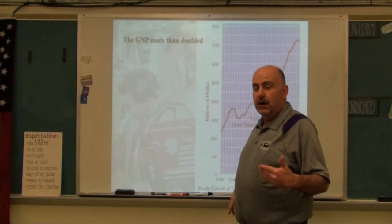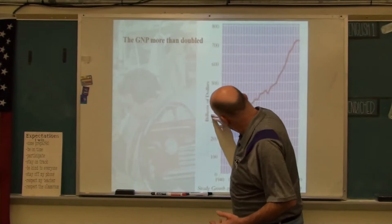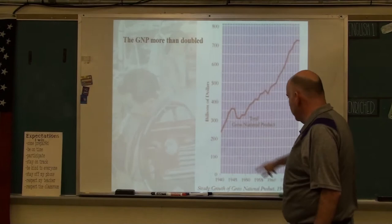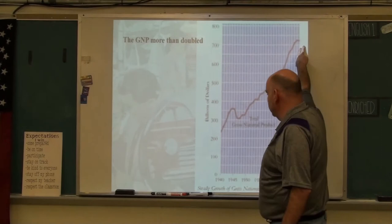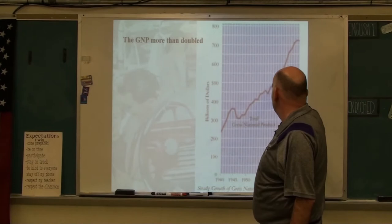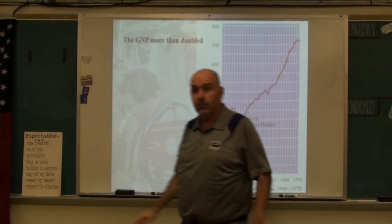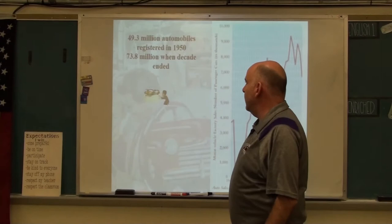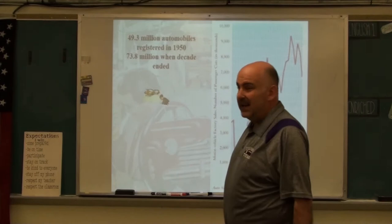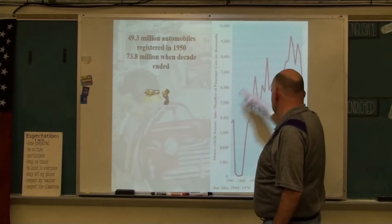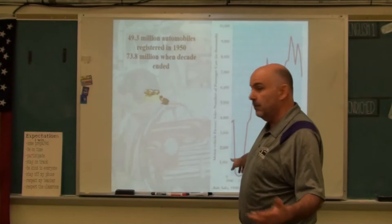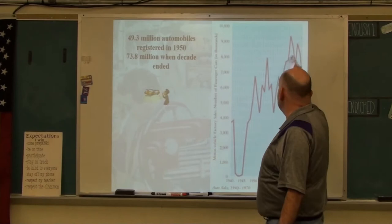The gross national product — that is the amount of goods a country produces, measured in billions of dollars — from 1940 to 1970, the gross national product more than doubled. By the end of the 1950s, the gross national product had more than doubled. There were 49.3 million automobiles registered in the 1950s, and by the end of the decade, 73.8 million. You see the big dip during the war because the automakers weren't making cars — they were making tanks, trucks, and planes.